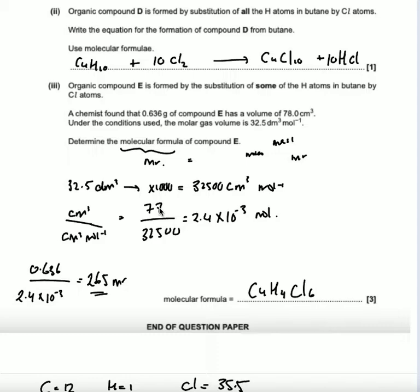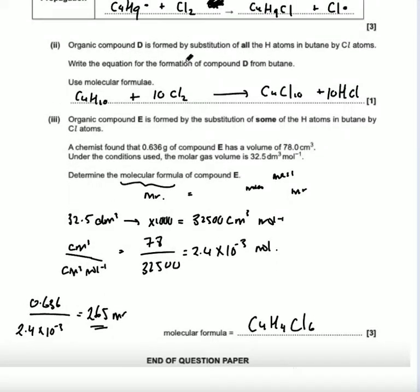Organic compound D is formed by substitution of all the hydrogen atoms in butane by chlorine atoms. Write the equation for the formation of compound D from butane. Use the molecular formula. So we start off with butane and chlorine. So we write butane, C4H10, plus chlorine, so Cl2.